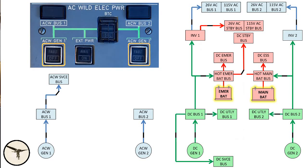The AC wild system powers systems that are needed for taxi and flight. For example, taxi lights, landing lights, hydraulic pumps, and ice protection.